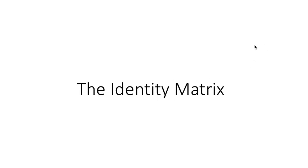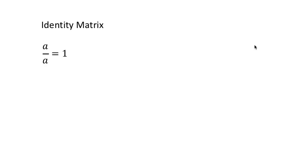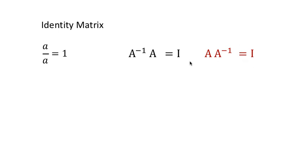Just a quick video to tell you a few key points about identity matrices. The identity matrix acts just like a 1 in normal algebra. A divided by A is 1. Now with matrices we can't divide — we multiply them by the inverse. But A inverse times A is I, or A times A inverse is also I. So I is just like a 1 in normal algebra.